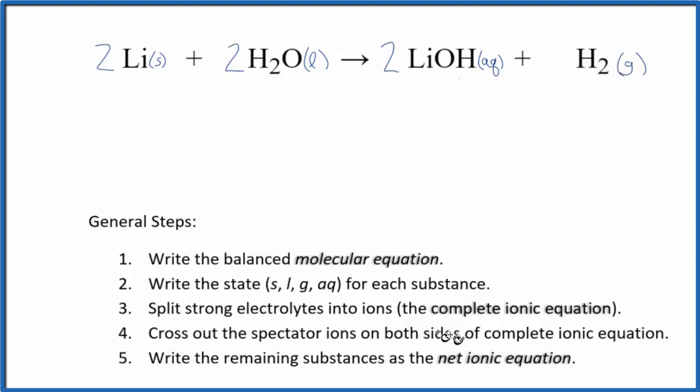Now we can split the strong electrolytes into ions. The only thing that's an electrolyte is LiOH. It's the only thing that's aqueous. Lithium is 1+. If you look at the periodic table, it's in group 1. And then the hydroxide, that's always 1-.